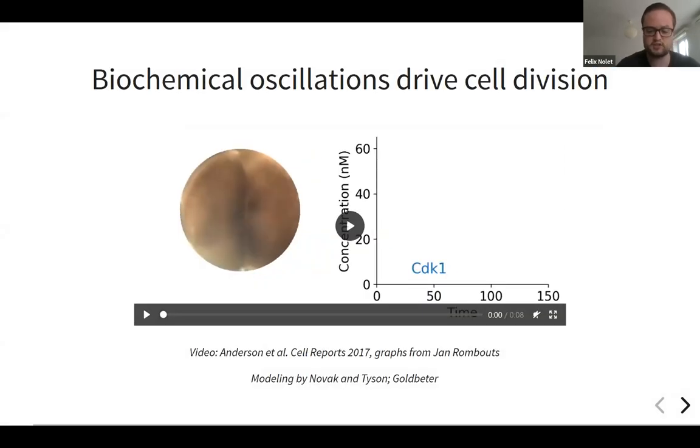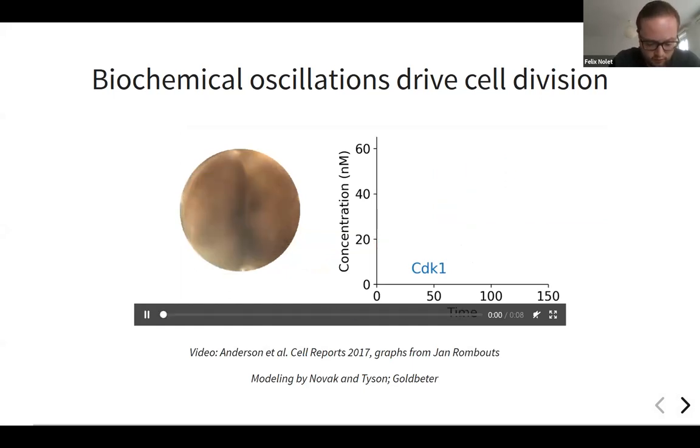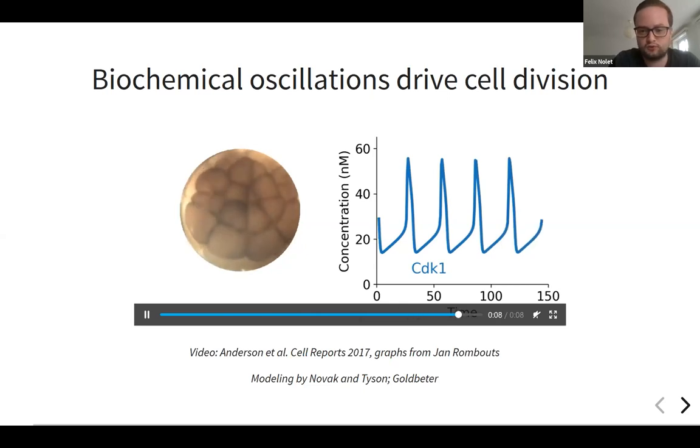Cell division is a very essential process in life. The cell cycle consists of different phases where different proteins interact with each other and the cell has to replicate its DNA and eventually divide. One protein that plays an important role is the enzyme cyclin-dependent kinase 1, abbreviated as CDK1. Every time when CDK1 has a high concentration, the cell divides. This is shown here on the left for the frog Xenopus laevis early embryo. You start with one egg and every time when CDK1 peaks, it goes from one to two to four to eight.